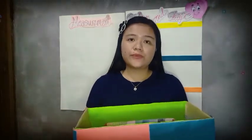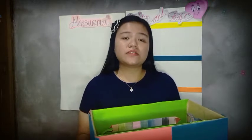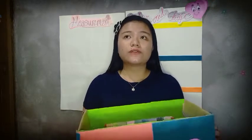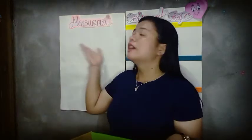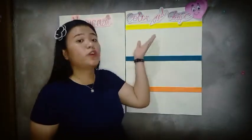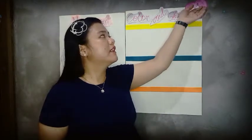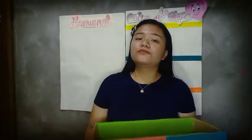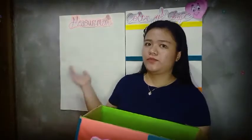First, we will try to describe what an attribute is. An attribute refers to the characteristics or traits of an object. There are many ways to describe the attributes of an object — we have measurement, color, and shape. We can describe an object using all of these. We will now first tackle measurement.